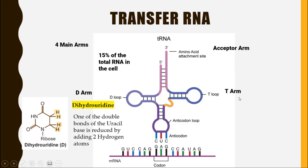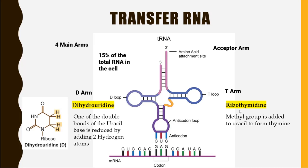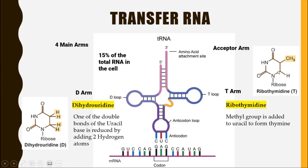The third arm present in transfer RNA is called the T-arm, because it contains nucleotides called ribothymidine. In this nucleotide, a methyl group is added to uracil to form thymine. The nitrogenous base uracil is attached with the ribose sugar, and a methyl group is attached to it, reducing the double bond to a single bond — a conversion of uracil into thymine. That's why this nucleotide is called ribothymidine, and these nucleotides are present in this area, so this arm is called the T-arm and the loop it makes is called the T-loop.